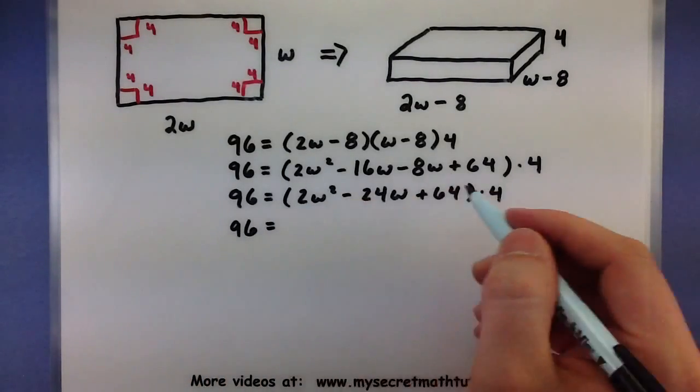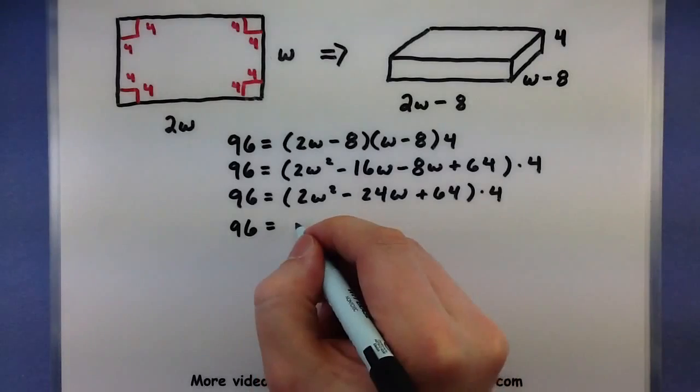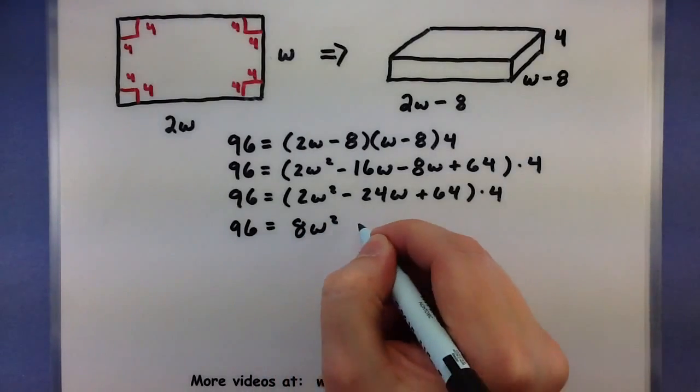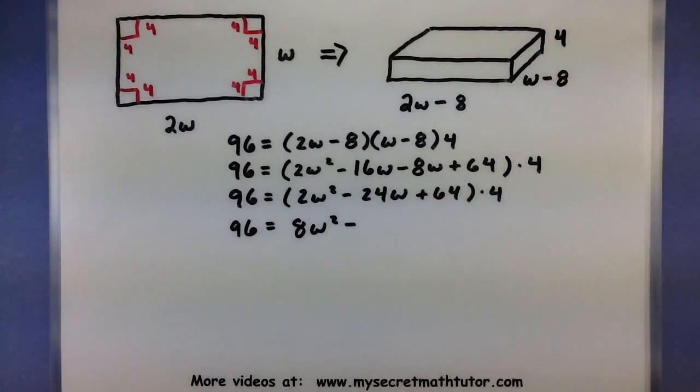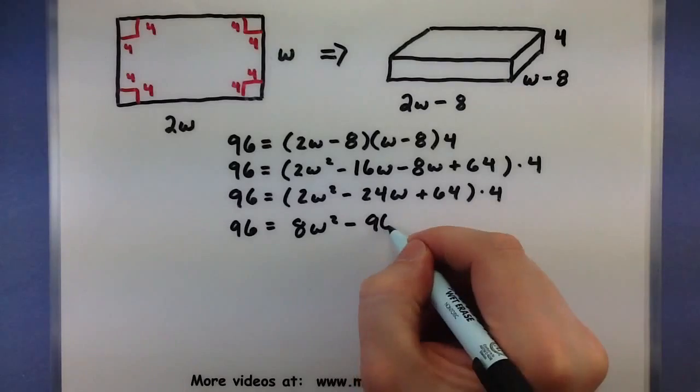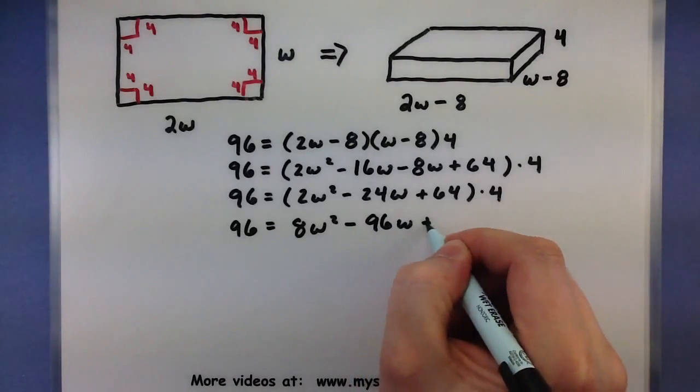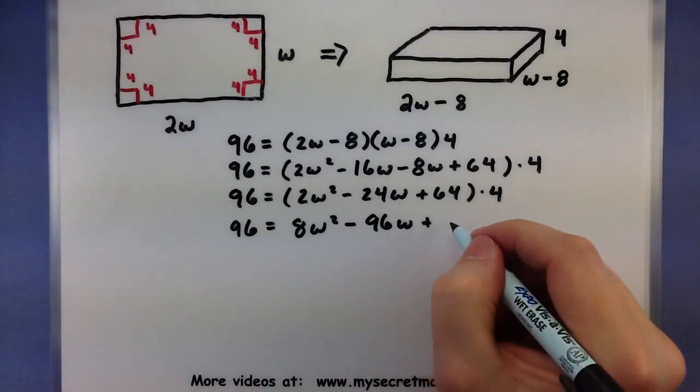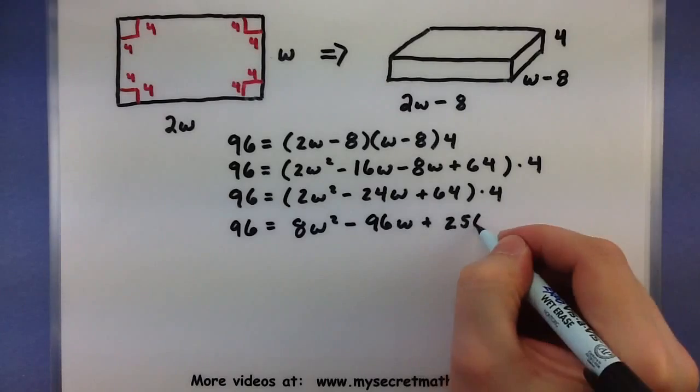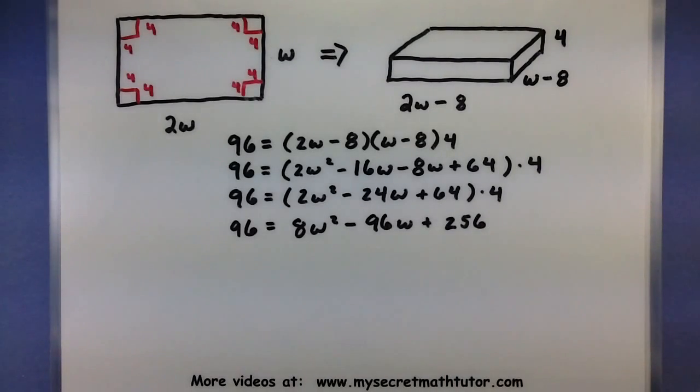Alright, now let's go ahead and distribute our 4 into the parentheses. So 8W squared minus 4 times 24 is 96W. And 4 times 64, 256.